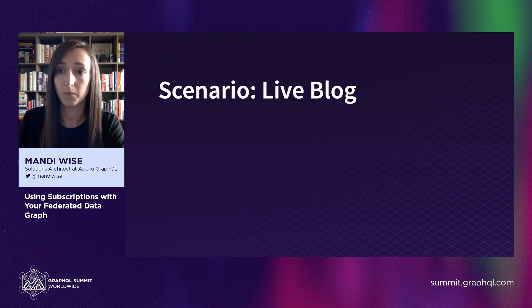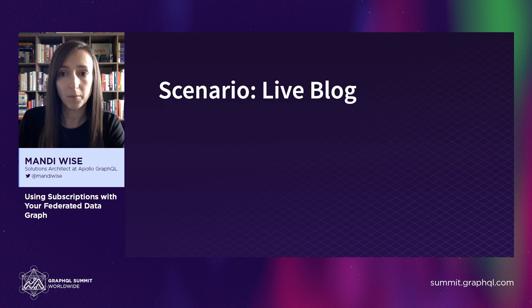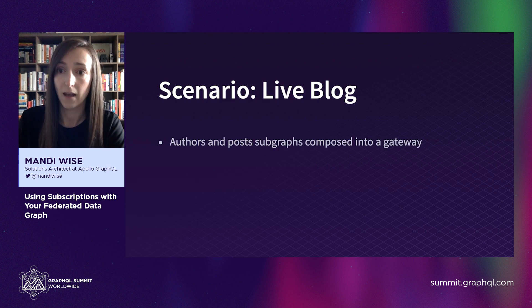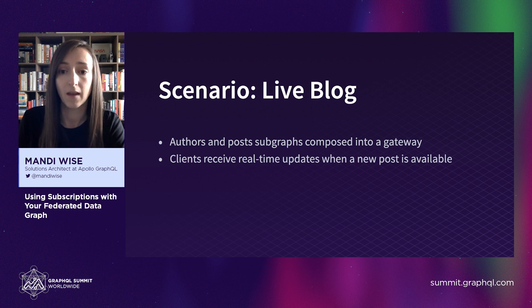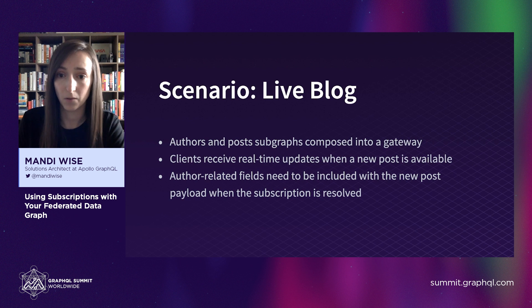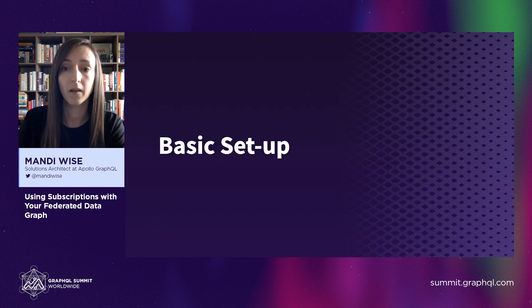To explore this solution in more depth, let's imagine the following scenario. We're going to build a live blog powered by Apollo Federation. This datagraph will have an author service and a post service. For this live blog, we'll need a single subscription operation to push new posts to subscribed clients immediately as those posts become available. In addition to the basic post data, we'll also need to traverse the graph to provide related author details in the subscription response.